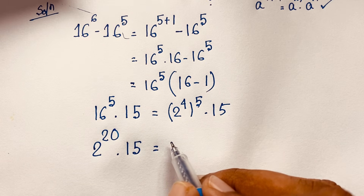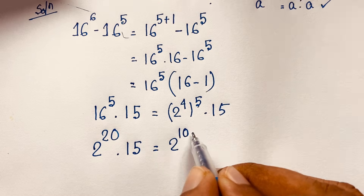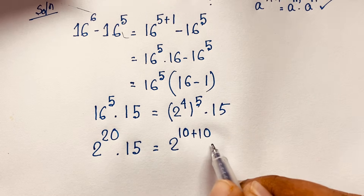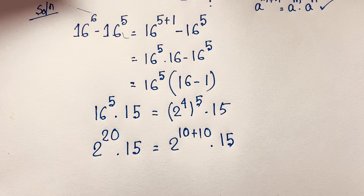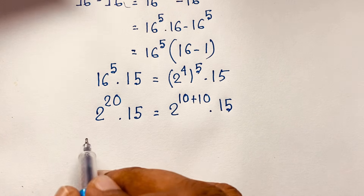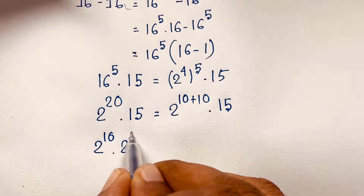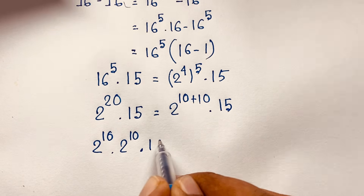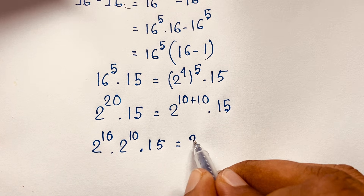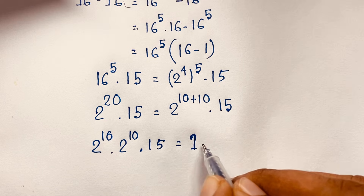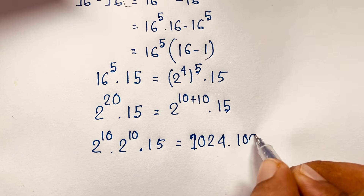Now 2 to the power 20 is equal to what? We can write 20 as 10 plus 10, so applying the formula again: 2 to the power 20 equals 2 to the power 10 times 2 to the power 10. Since 2 to the power 10 equals 1024, we have 1024 times 1024.